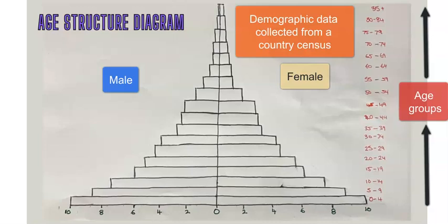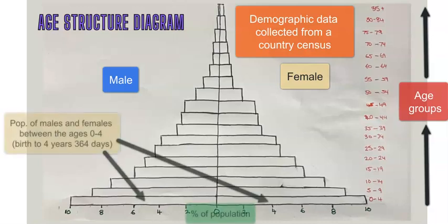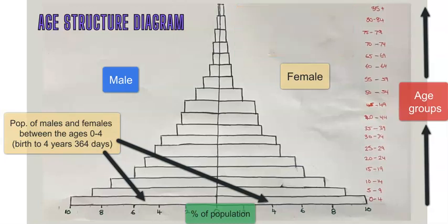This diagram shows males on the left-hand side and females on the right-hand side, and the percentage of the population in each age group. For example, in this diagram the male and female population aged 0 to 4 is the greatest, indicating the largest age group in that country. This shows a high fertility rate, denoted by a large population of children between the ages of 0 and 4. Every country will have its own shape, patterns, and trends on its population pyramid.